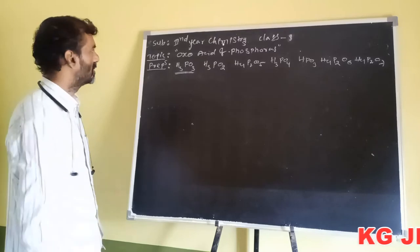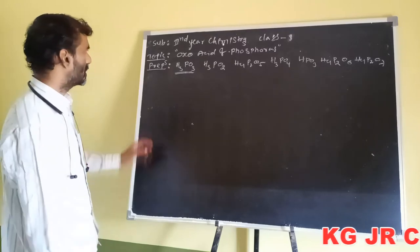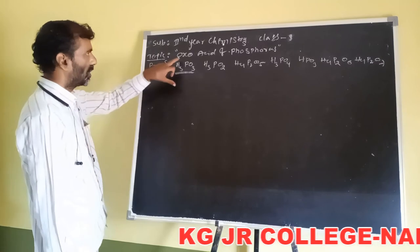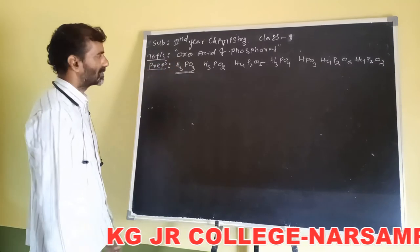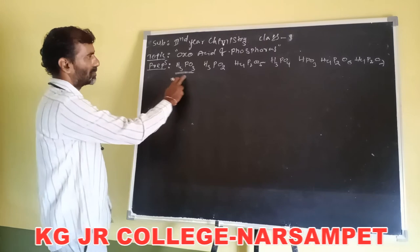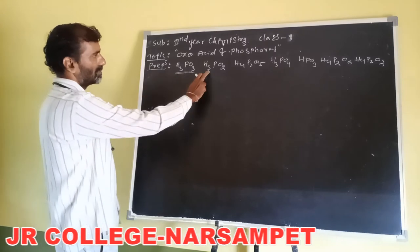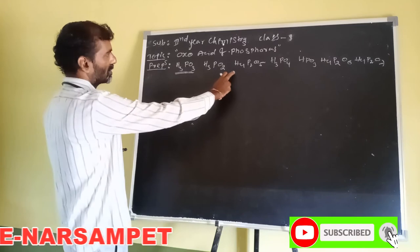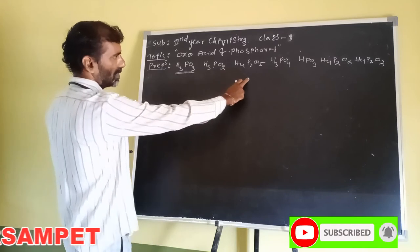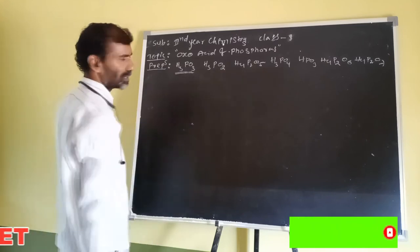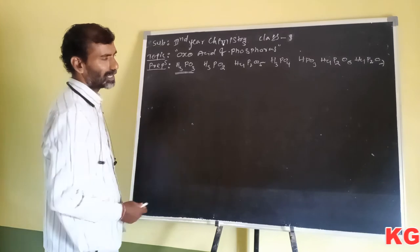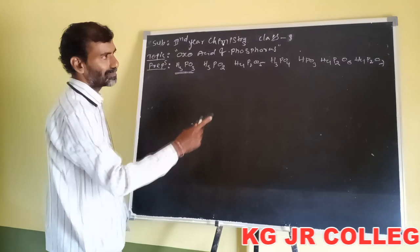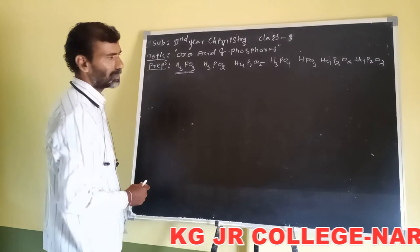Hello students, today we discuss the preparation of oxoacids of phosphorus: orthophosphorous acid, hypophosphorous acid, pyrophosphorous acid, phosphoric acid, metaphosphoric acid, and pyrophosphoric acid.